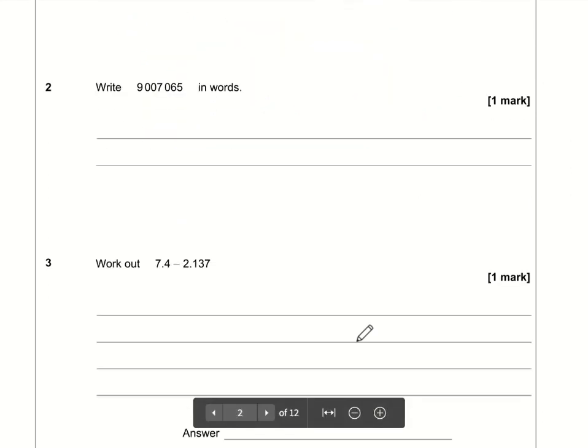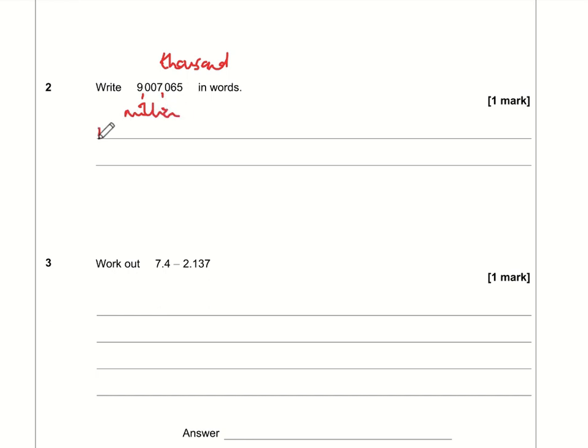Write this number in words. So we just need to remember that it's probably easy actually if you put commas in, they've put gaps in. So put a comma in after every group of three when you're going from right to left. Now you just need to remember that the first comma represents the word thousand and the second comma represents the word million. So the answer is nine million, seven thousand and sixty-five.